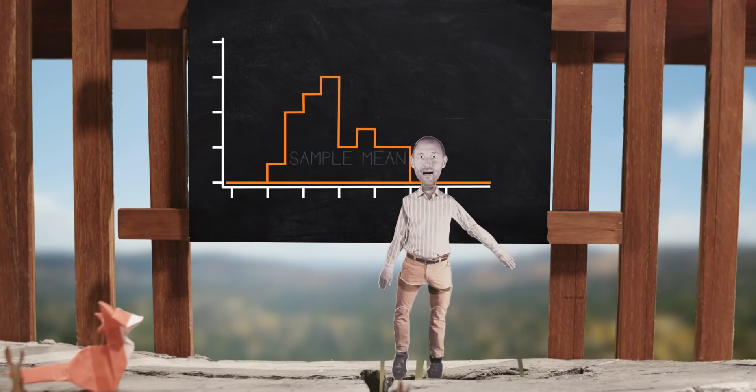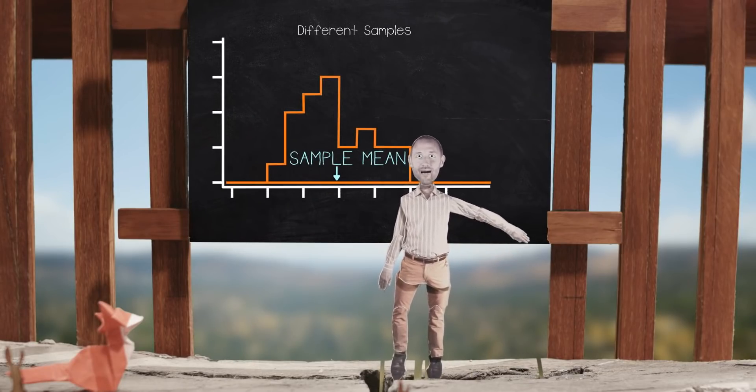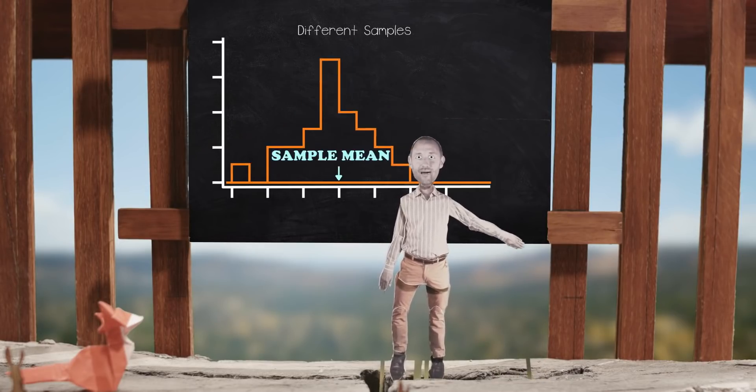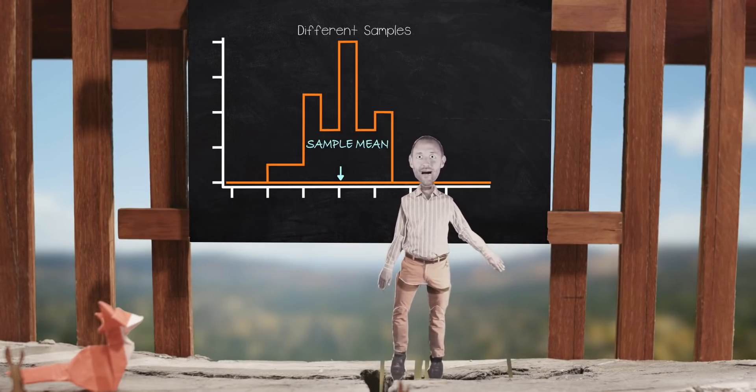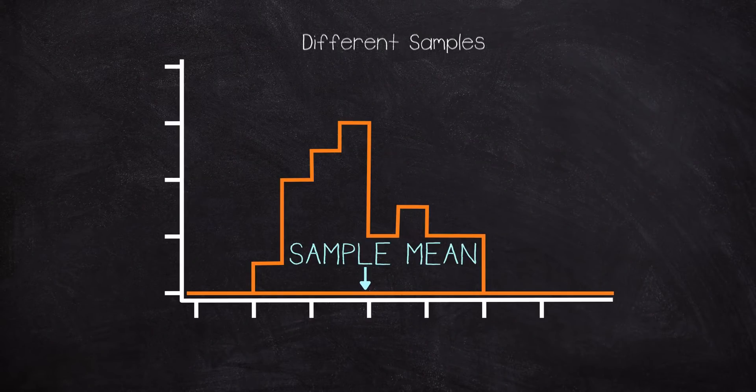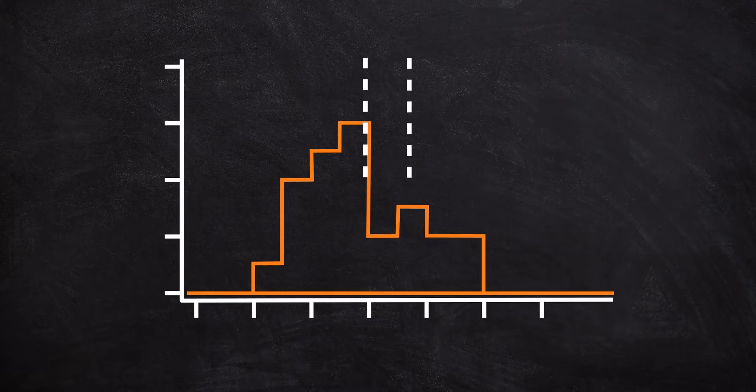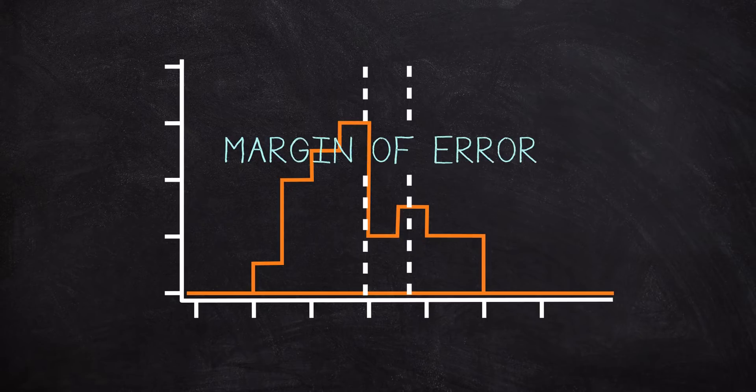The sample mean is our best guess at the population mean, but yes, we know that this estimate will differ a bit from the true value due to what we call sampling variability. To account for differences that would occur between samples taken today, yesterday, or tomorrow, we can attach a margin of error to our estimate and be reasonably confident that we will capture the population mean. This is the idea behind a confidence interval.